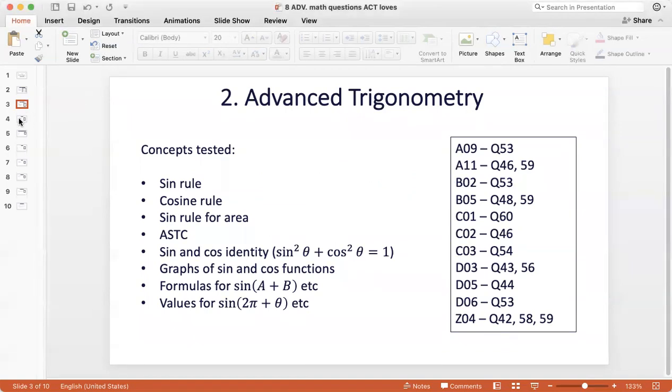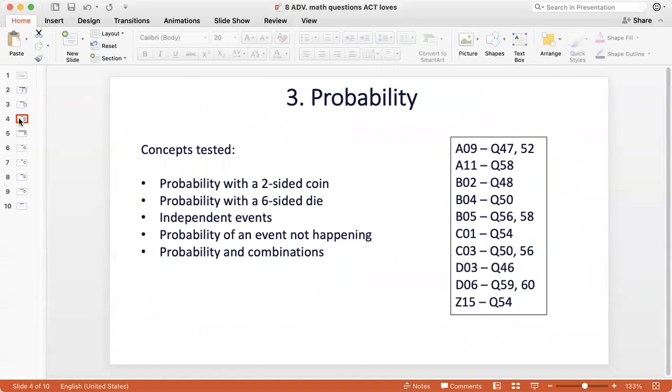In terms of numbers, the third topic is probability. Probability on the ACT is varied. You have simple probability questions involving a two-sided coin, a six-sided die, or a 52-deck of cards. And you also have probability of slightly more advanced variety, which involves independent events, probability of an event not happening which is 1 minus the probability of the event happening, and specifically probability and combinations, a topic that has been coming a lot in recent tests. All of these questions pertain to probability. This was 14 questions in the analysis.